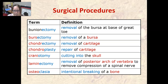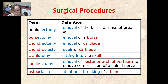Bursectomy is the removal of a bursa. Chondrectomy is the removal of cartilage. Chondroplasty is a repair of cartilage. Craniotomy is cutting into the skull — it is usually done to remove pressure.